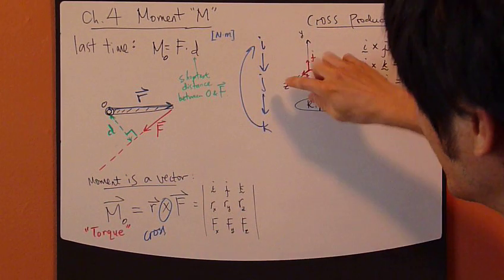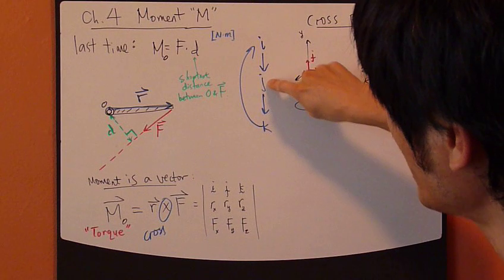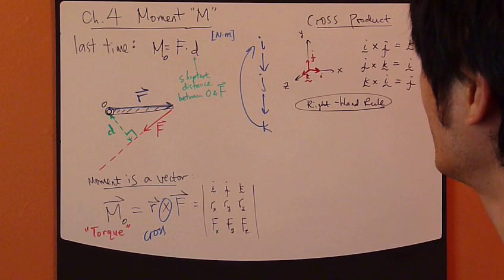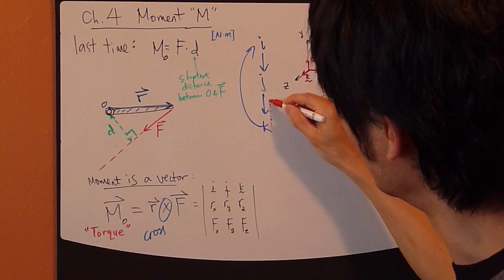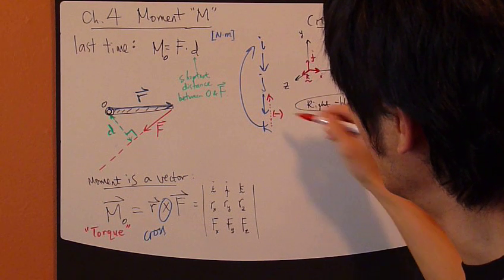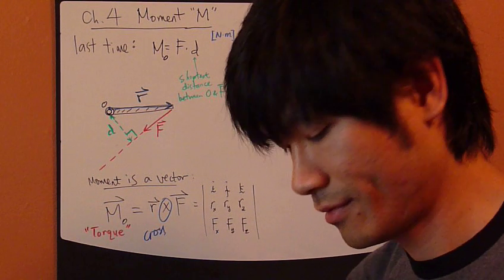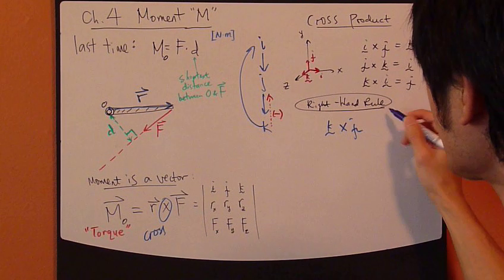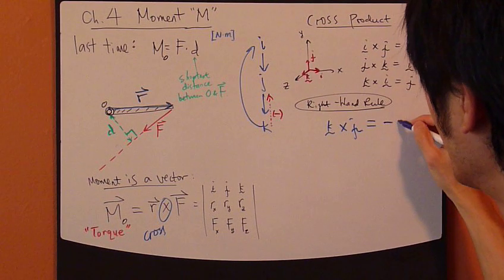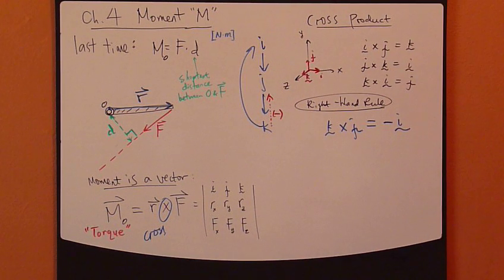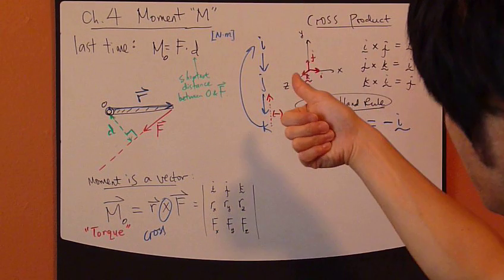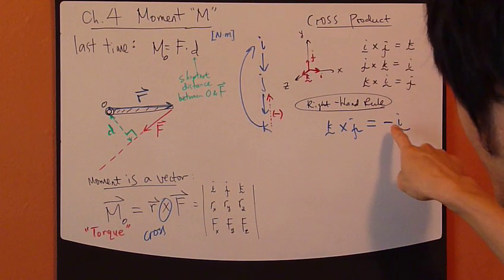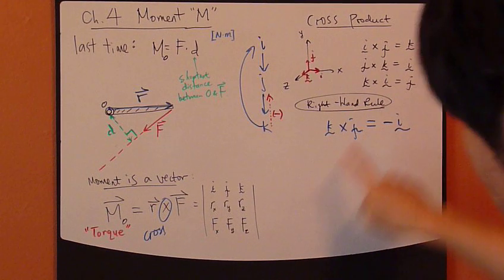If it's the opposite, let's say if I want to cross K with J, so K cross J is simply, it just flips the direction. K cross to the J, it would just be negative. So K cross J gives you negative I. So right-hand rule gives you the positive direction. If you go reverse direction, then you need to add a negative sign.